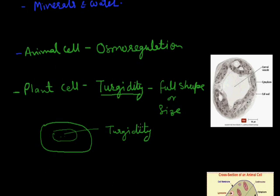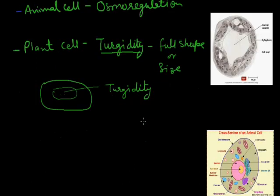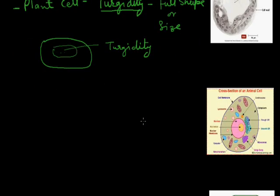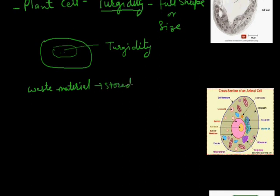In the case of plants, vacuoles are also responsible for storing waste material. All the waste material produced during metabolic activities inside the plant body is stored in the vacuoles.